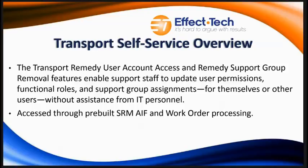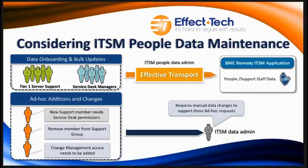Let's take a look at the use case here. Transport's bread and butter is onboarding foundation data into Remedy. But even though we may have been running bulk updates to get the environment up and running faster, there are many times with our customers where the bulk updates do not satisfy all conditions. Some fine-tuning is required, and these transactional requests are typically handled by your service desk or Tier 1 groups — requests for support groups, permissions, or other types of people record modifications.